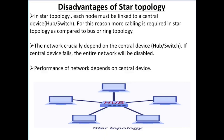Now, disadvantages of star topology: each node must be linked to a central device, so more cabling is required in star topology as compared to bus or ring topology — jadha cables aapko chahiye because all devices are connected with cables. The network crucially depends on the central device — if the central device fails, the entire network will be disabled. Agar central device fail ho jata hai, toh complete network disable ho jayega.